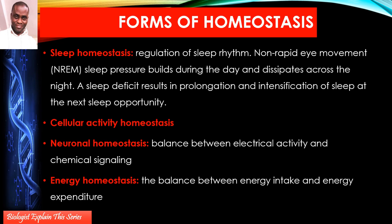Then we've got neuronal homeostasis, which talks about the balance between electrical activity and chemical signaling. There are two systems of communication that nature has designed. Plants have only one — chemical — using plant growth regulatory substances: auxins, gibberellins, abscisic acid, cytokinins, and ethylene. Animals are both electrical (neural) and chemical (hormonal).